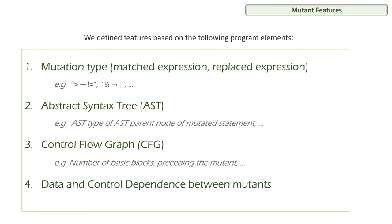To conclude, there is a problem of a large number of mutants that hinders the use of mutation testing in practice. We tackle this problem using machine learning and propose a set of static code features to find fault-revealing mutants. Our results show that ranking mutants by their fault-revealing probability leads to finding faults faster and provides high fault revelation while keeping the number of mutants used low. Thank you.